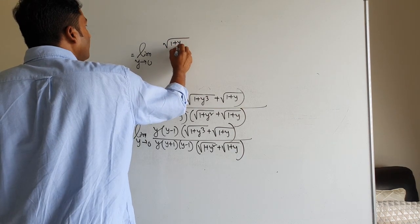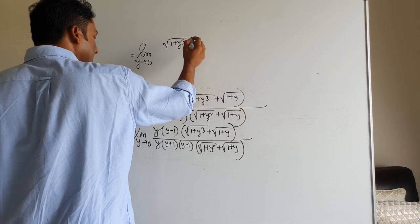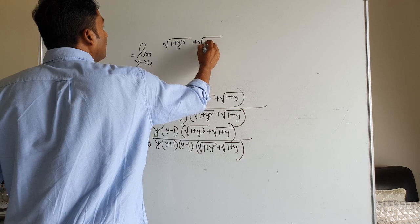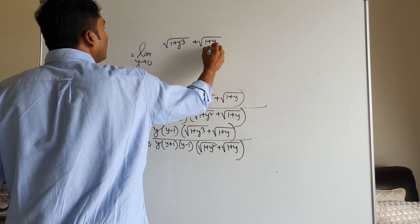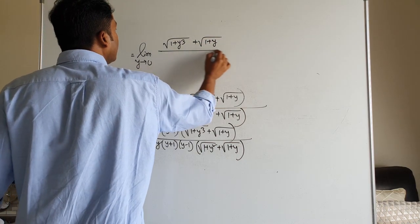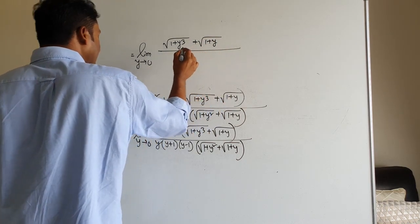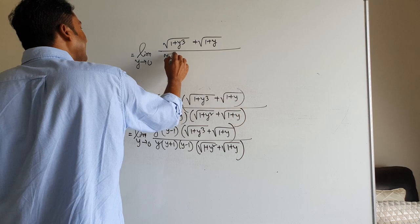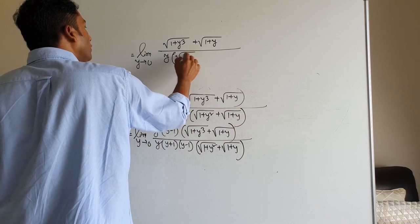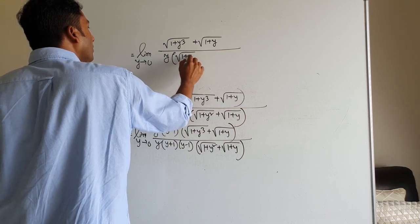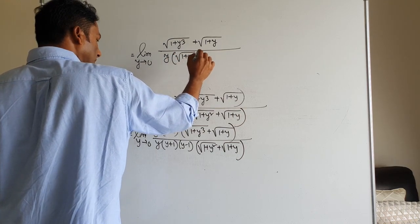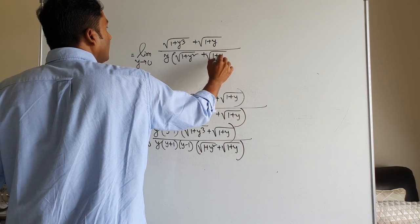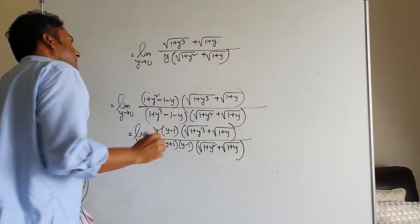We have y cubed plus root over one plus y, divided by y into root over one plus y squared plus root over one plus y.